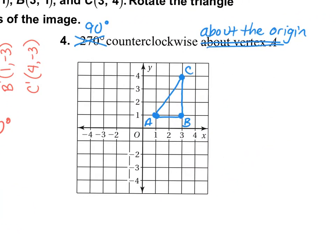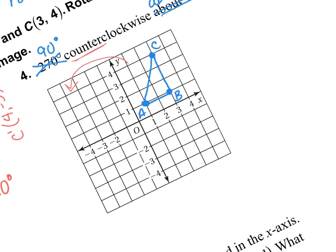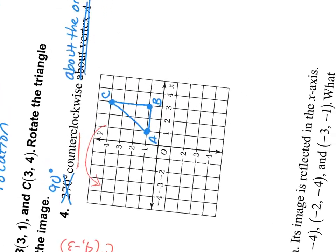This time what we're doing is 90 degrees counterclockwise about the origin. So we're heading counterclockwise — against the clock — going in this direction, which means it'll end up in this quadrant here. And what we're going to do, again, is literally turn our paper in the direction we want to go. So in this case, I want to go counterclockwise, so I'm going to turn it 90 degrees counterclockwise.